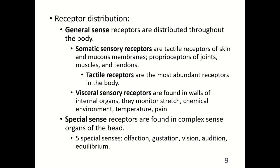There are general sense receptors and special sense receptors. General sense receptors are distributed throughout the body and include somatic sensory receptors and visceral sensory receptors. Somatic sensory receptors are tactile receptors of the skin and mucous membranes, and proprioceptors of joints, muscles, and tendons. Tactile receptors are the most abundant receptors in the body and will largely be phasic — they will adapt.